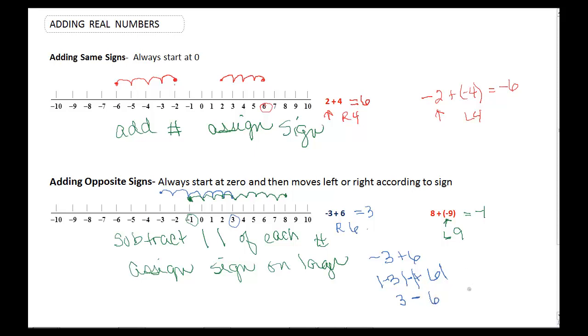And 6 minus 3, if you want to switch them around, you could say 6 minus 3 is equal to 3. Now we just have to determine what the sign is. And 6 is larger and it's positive, so we have a positive 3.